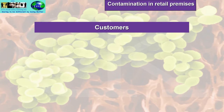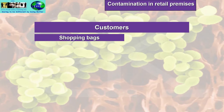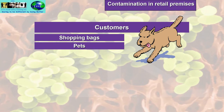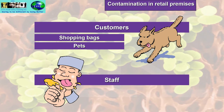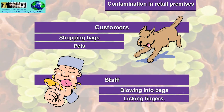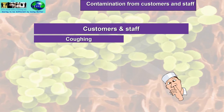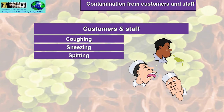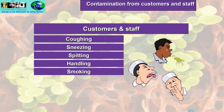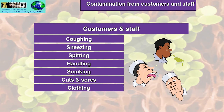Contamination in retail premises could come from customers — for example, shopping bags and bringing pets into the premises. Dogs are not normally allowed into catering premises unless they are guide dogs. Staff with poor hygiene practices can also cause contamination, such as blowing into bags or licking fingers. Other sources for customers and staff include coughing, sneezing, spitting, handling food, smoking, cuts and sores, clothing and hair.